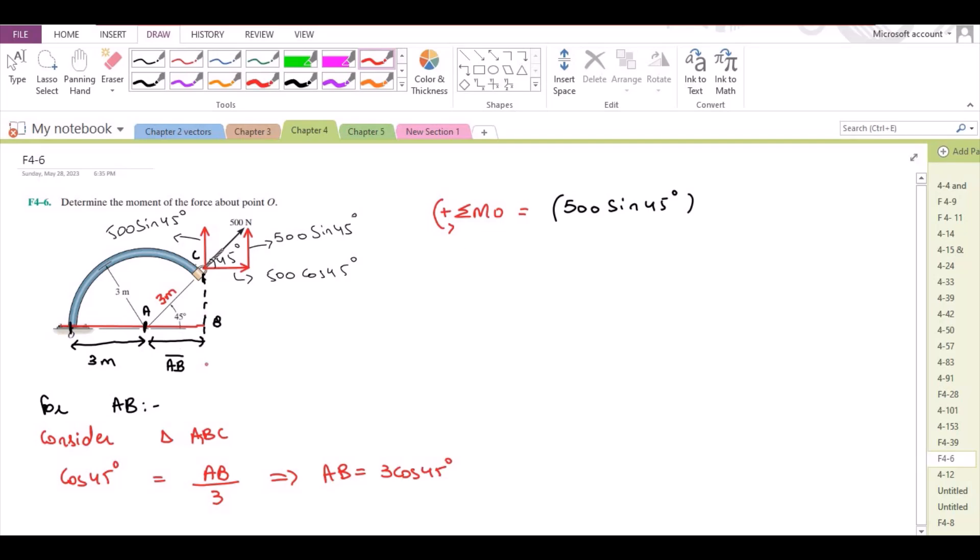Our total moment arm becomes 3 plus 3cos45 degrees. Now for the horizontal force component.